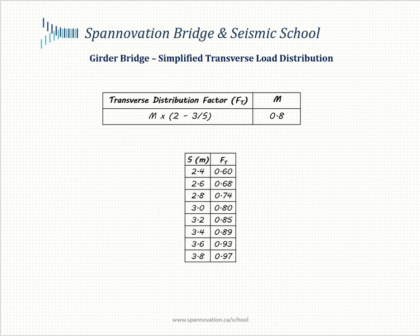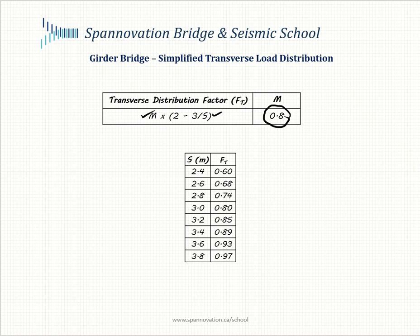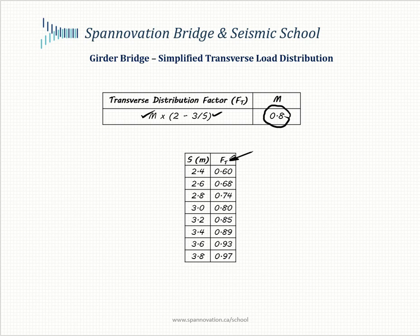Our recommendation for conceptual design is to use the simple formula Ft equal to (2 minus 3/S) times a multi-lane modification factor M of 0.8. Applying this formula and tabulating values for girder spacings ranging from 2 to 4 meters, these transverse distribution factors provide an easy and quick way to obtain numbers close to reality without being overly conservative. They compare well to values obtained from the Canadian Highway Bridge Design Code.